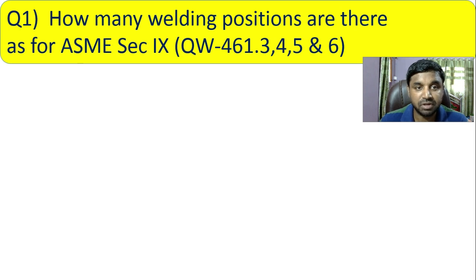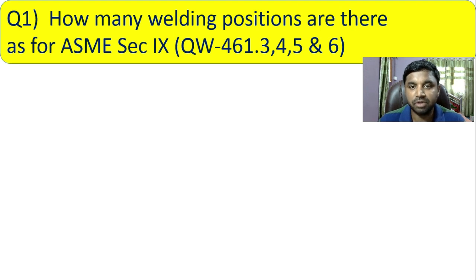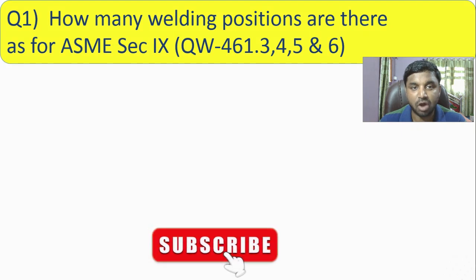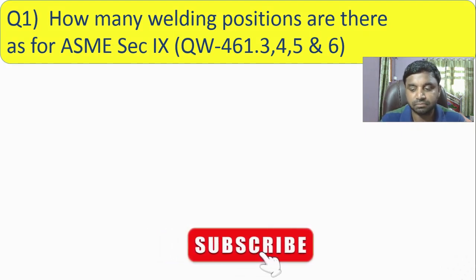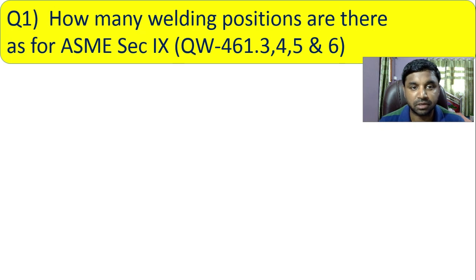The first question is: how many welding positions are there as per ASME Section 9? Refer to QW 461.3, 461.4, 461.5, and 461.6. This is a very important question that they will definitely ask. As a welding inspector, you should know the answer.